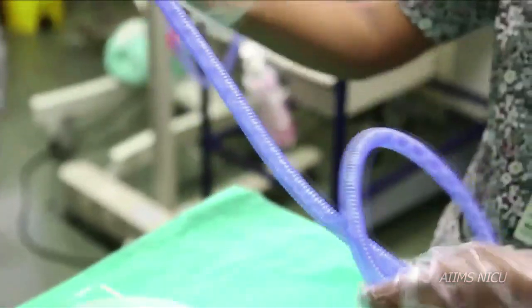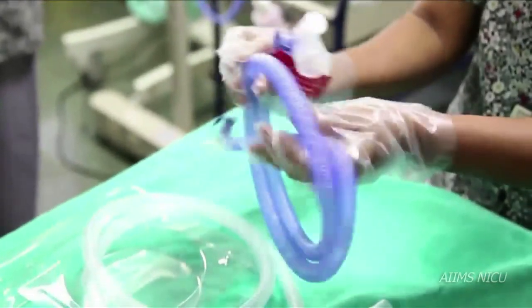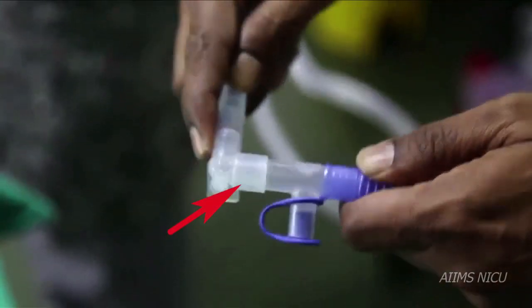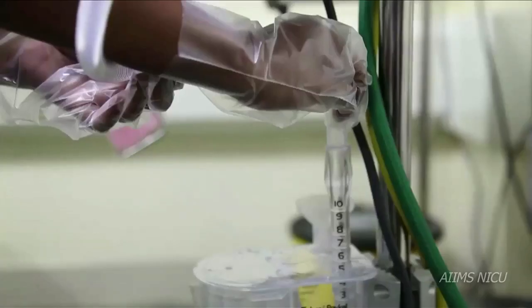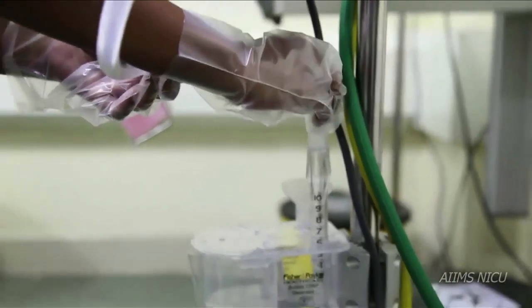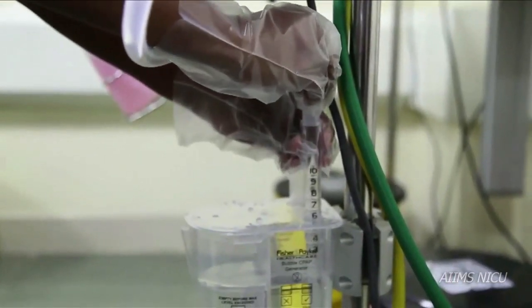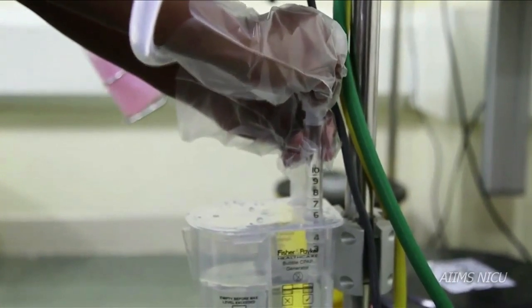Now connect the blue inspiratory limb to the other port of the water chamber. To the other end of the blue inspiratory limb, lock the white expiratory limb of the bubble CPAP circuit. The second end of the expiratory limb is connected to the bubble chamber.